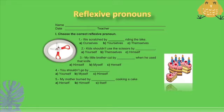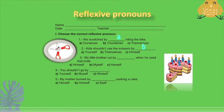Hello guys, it's Teacher David. We're going to check your homework — please take it out. The first exercise says: choose the correct reflexive pronoun. Number one: we scratch by blank riding a bike — the answer is ourselves. Next: kids shouldn't use the scissors by themselves. Next: my little brother could hurt himself when he used that knife. Next: you shouldn't go by yourselves. And the last one: my mother burned herself cooking a cake.